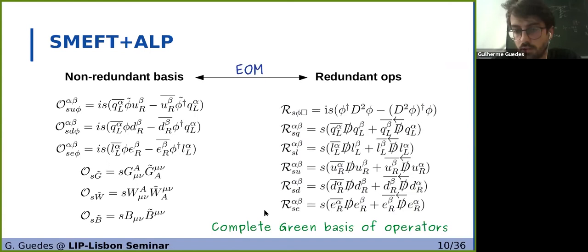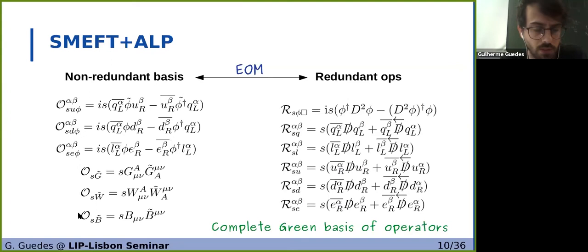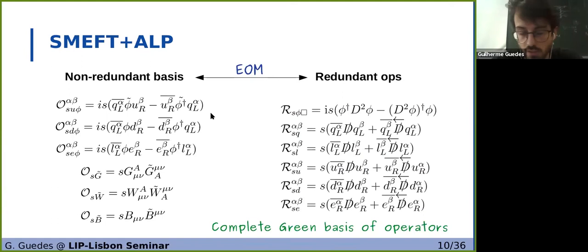Focusing on the non-redundant basis, we have three Yukawa-like operators that couple up to the Higgs and the fermions, and three operators which couple to the gauge bosons. These are all Hermitian operators, so the coefficients that follow them are real. In the Yukawa-like operators we have real matrices in flavor space, and here real numbers. As mentioned, these are only CP even — each of these operators also has a CP odd counterpart of very similar structure. We follow the Warsaw basis spirit in the sense that we have very few derivatives. However, in the literature it's common to use a different basis which uses the derivative acting on the ALP.